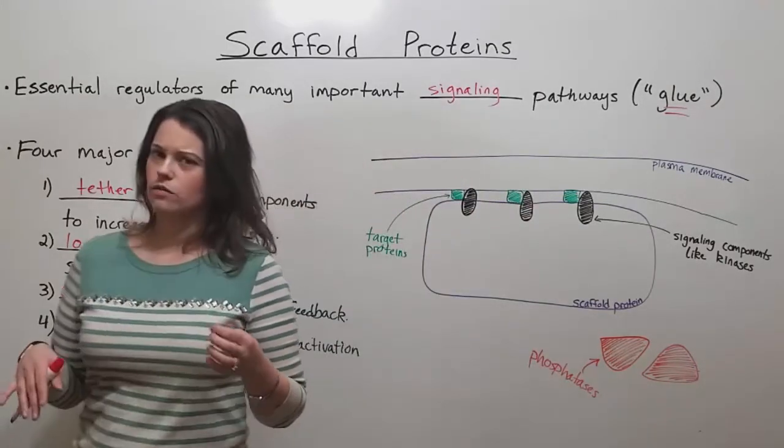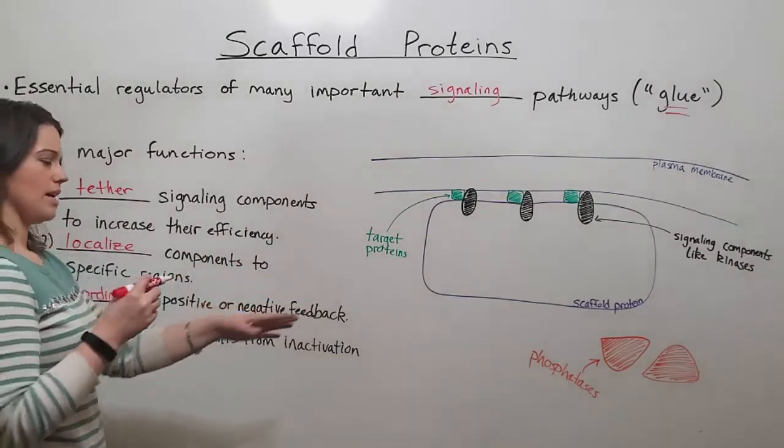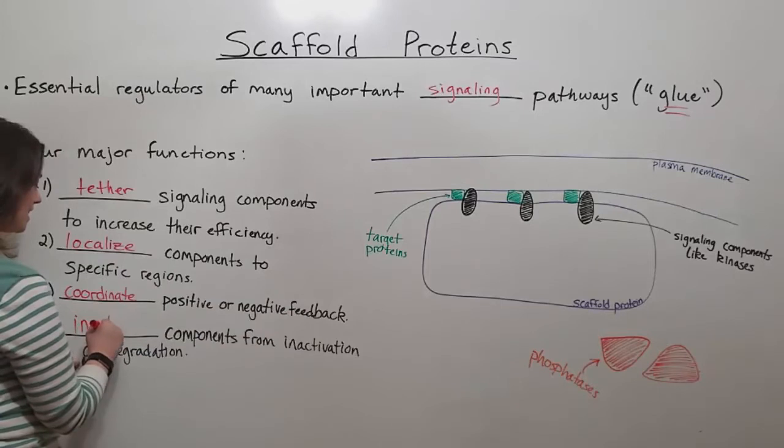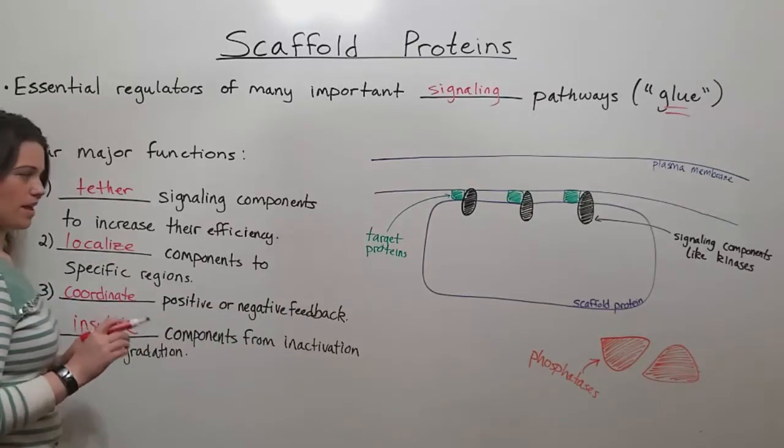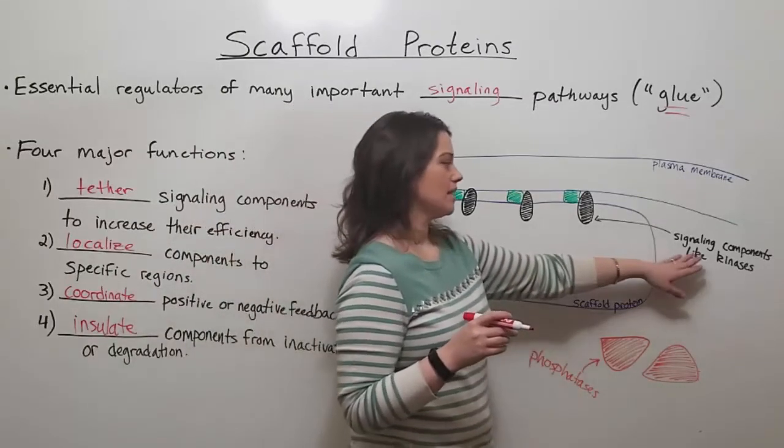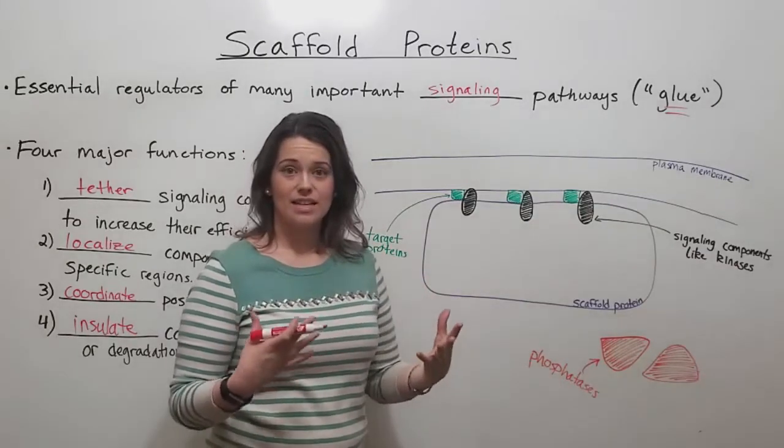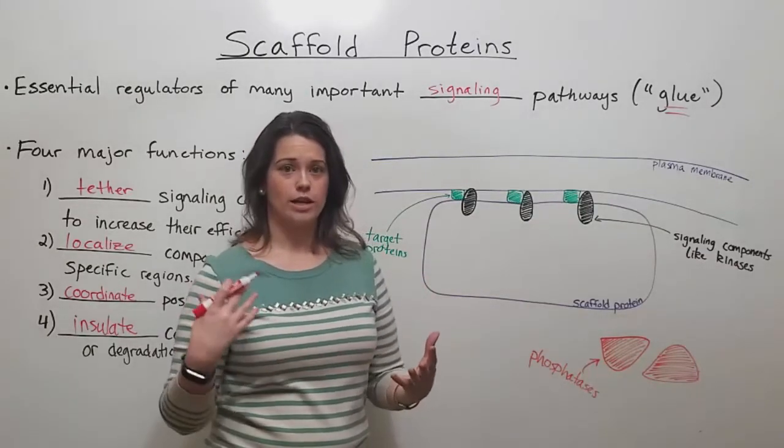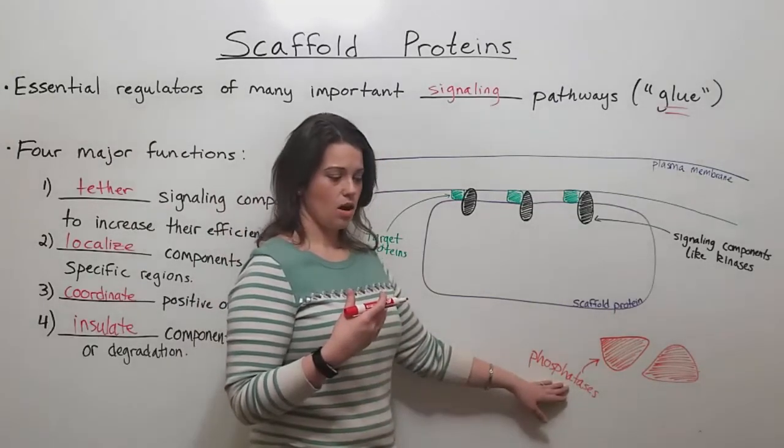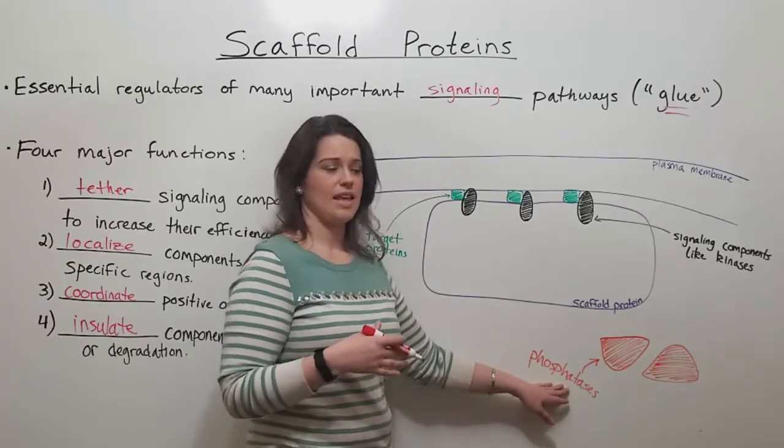The fourth and final function involves the scaffold protein insulating or protecting signaling components from inactivation or degradation. As an example, kinases are important signaling proteins that activate downstream targets by transferring a phosphate group to them. Phosphatases are enzymes that dephosphorylate things and can inactivate them.